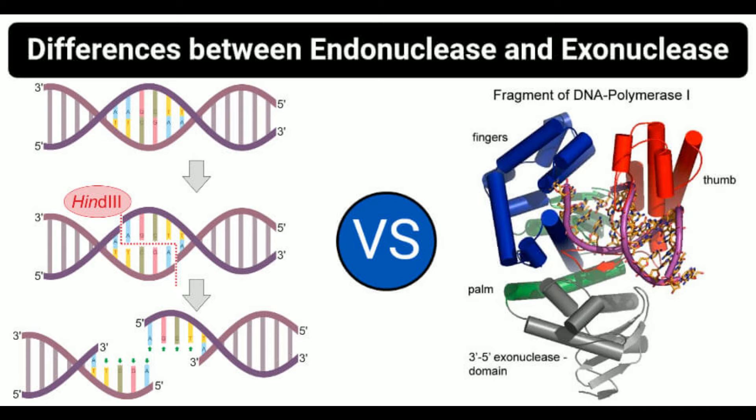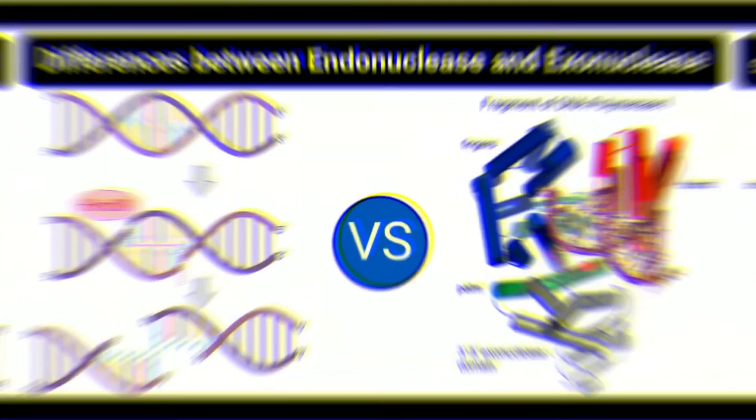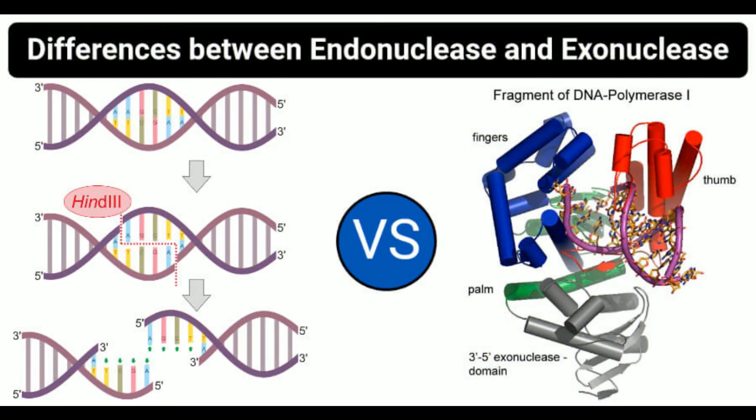Comparing definitions: an endonuclease is a group of enzymes that cleave the phosphodiester bond within a polynucleotide chain, while exonucleases cleave DNA sequences from either the 5' or 3' end. Regarding cleavage: endonucleases cleave the nucleotide sequence from the middle, whereas exonucleases cleave from the ends. Regarding lag period: some endonucleases like restriction endonucleases have a lag period before activity, while exonucleases do not. Regarding results: endonucleases produce oligonucleotides, while exonucleases yield individual nucleotides.